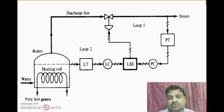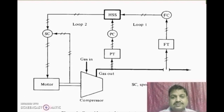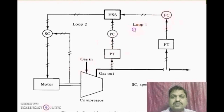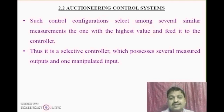Similarly, we have another example — a compressor system. Here also we have two things: flow control and pressure control. Both can be controlled using the same principle of selective control.